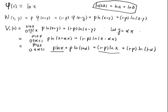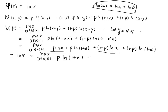So we have log x, and since x is a parameter and α is the variable, we can pull log x out in front of the maximization. The problem becomes: log x plus the maximization over α ∈ [0, 1] of p·log(1 + α) + (1 - p)·log(1 - α), where p is the win probability parameter.